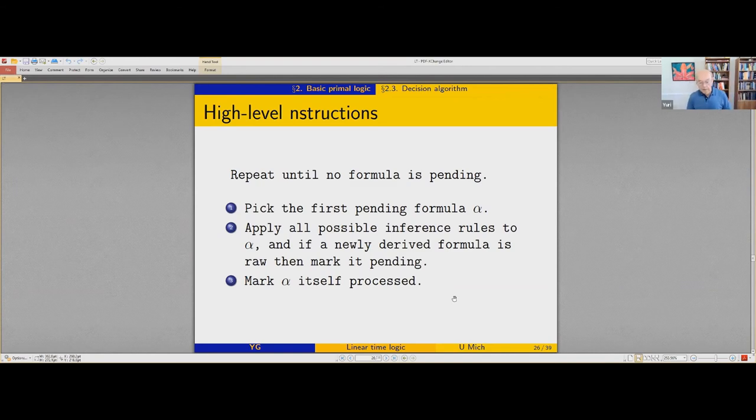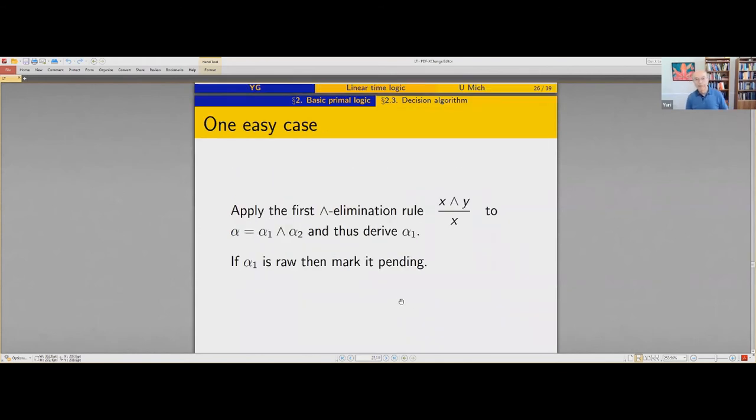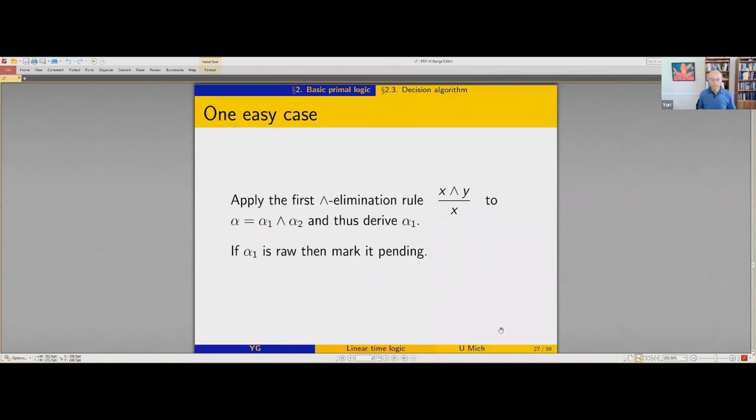Here is the algorithm. Repeat until no formula is pending. Pick the first pending formula, alpha, and apply all possible inference rules to alpha. If some formula which used to be raw now is derived, mark it pending. When you finish this, alpha itself is processed, forget about it, move to the next pending formula. So let me consider two cases of applying inference rules to alpha. One easy case. Suppose alpha has this form. Alpha is a conjunction. Then what I derive, I derive alpha one, and if alpha one was raw, I just mark it pending. So this is very easy. Constant time.